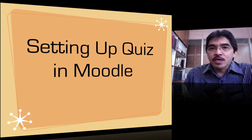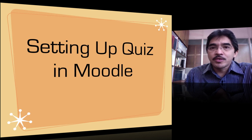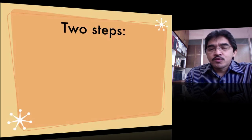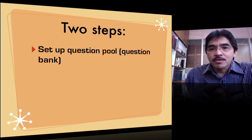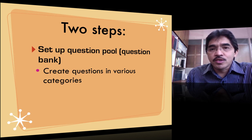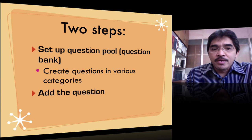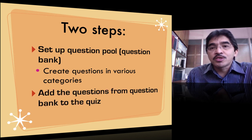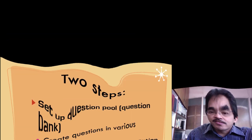In the next few videos I will walk you through a complete and detailed step of how to set up a quiz in Moodle. Basically there are two steps involved: the first step is to set up a question pool or question bank, where you will create questions in various categories. We create categories to manage and organize our questions so we can find them easily when we set up our quiz. The next step is to add questions from the question bank. So let's get started.